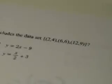Hey, I'm Varun, and I'm going to show you TAKS tip number 9. Which function includes the data set 2, 4, 6, 6, and 12, 9? Well, TAKS tip number 9 tells us to work backwards. So let's start with answer choice A.